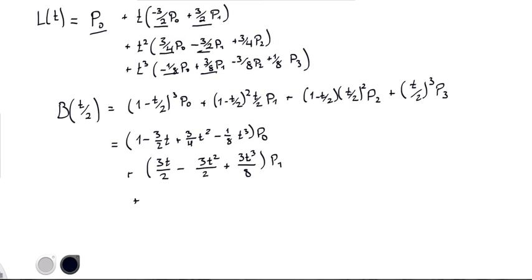And then again, for P2, we have, this is just going to be 3 fourths T squared minus 3 T cubed over 8 P2. And then again, here we have 3 fourths, here we have minus 3 over 8, so these coefficients are the same.